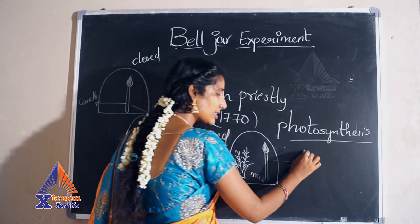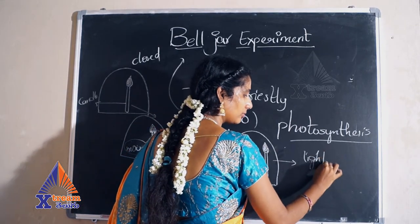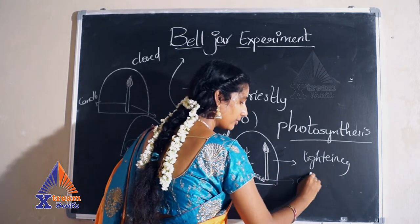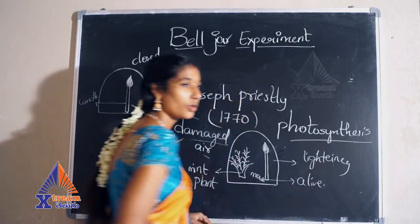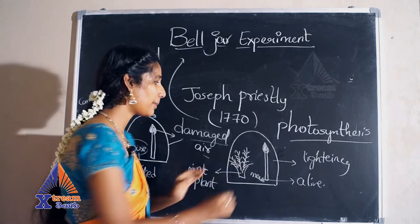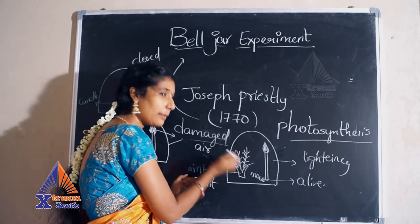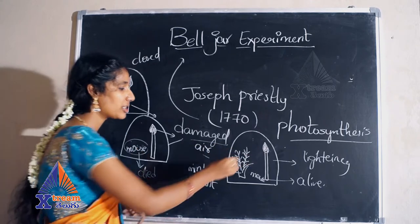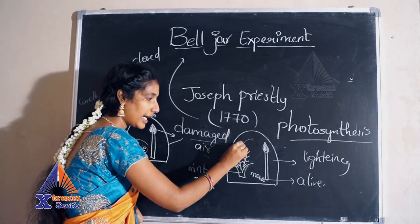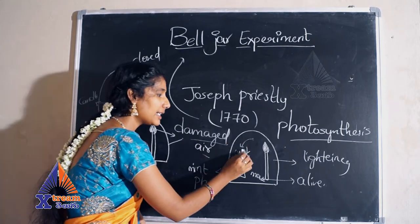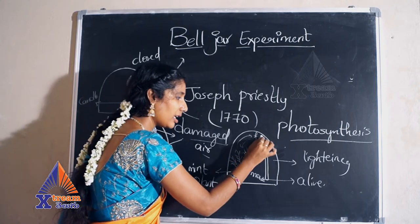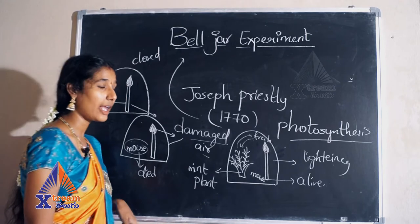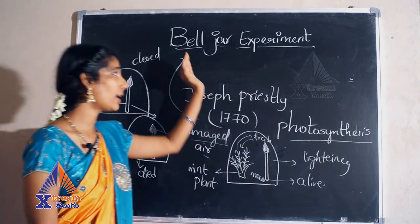After sometime he observed that the candle was lighting and the mouse is alive. So he observed that some air is being restored by the plant. The damaged air which was present in the bell jar was restored by the plant, and the plant was giving fresh air in the bell jar so that the candle is lighting and the mouse is also alive.